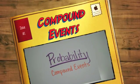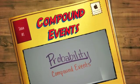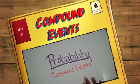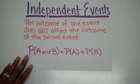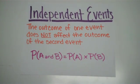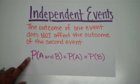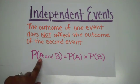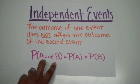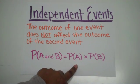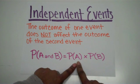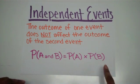Hey guys, today's video is on the probability of compound events. There are two different types of compound events. The first one is independent events. With independent events, the outcome of one event does not affect the outcome of the second event. They're independent of each other. A formula we can use to find the probability of A and B, two independent events, is taking the probability of event A and multiplying it by the probability of event B.